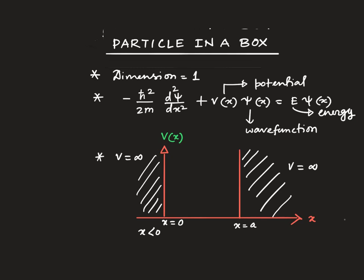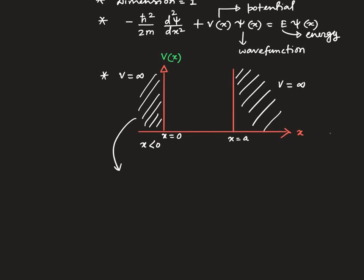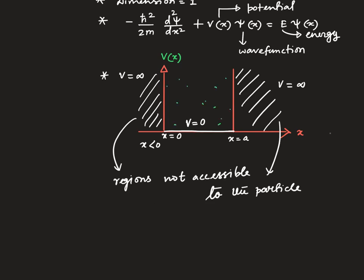That means these two regions are not accessible to the particle, and we are assuming here in this region the potential is 0. So here V equals 0.